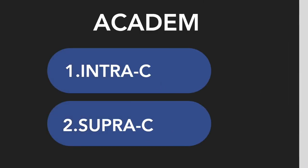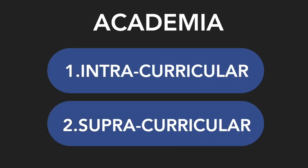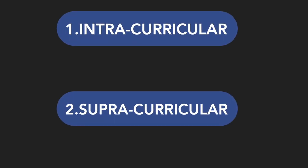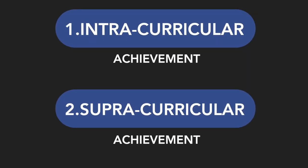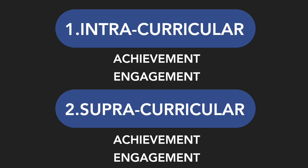In the previous lesson we were introduced to the pillar of academia and saw how it can be broadly split into intracurricular and supracurricular academia, and further split into achievement and engagement. Let's now take a look at some specific examples.